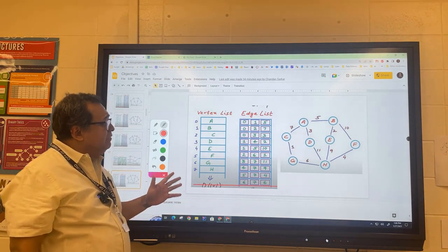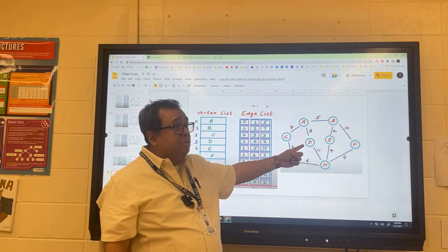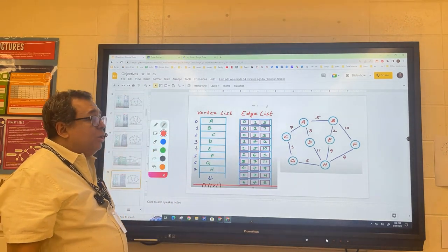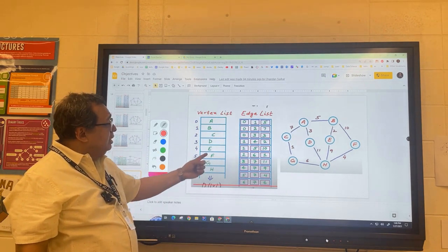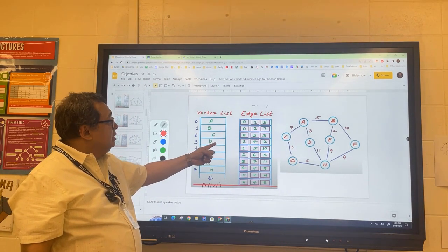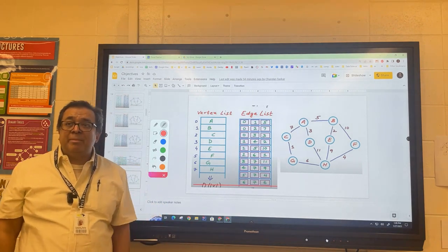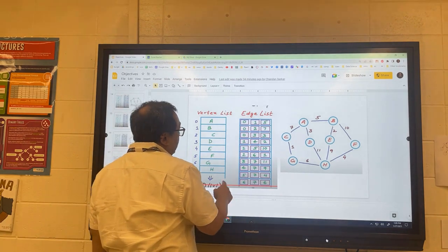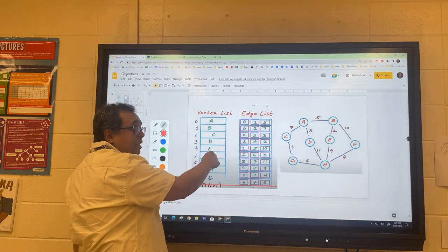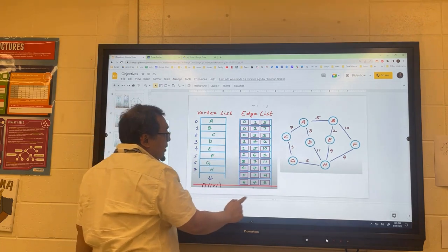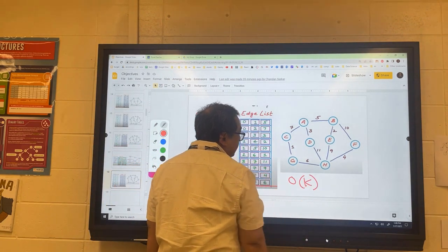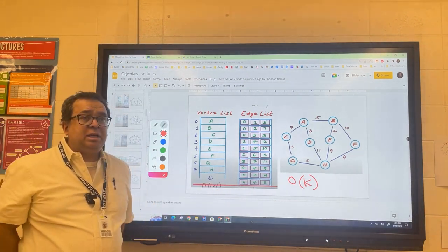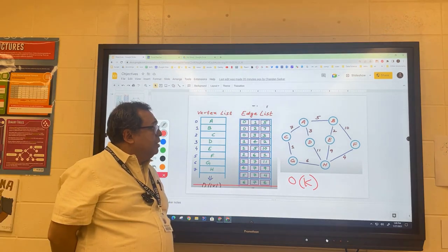So now the question becomes, we want to find out all the nodes that are connected to node D. If we were to use some sort of hashing scheme here, what would be the Big O of converting from the name D to the number 3? What would be the Big O of that operation? It's O of K. So here, the part where we look up the name and translate it into a number, that would be O of K.